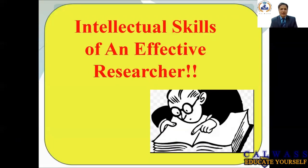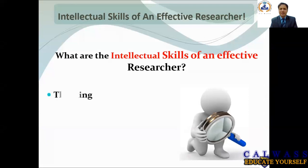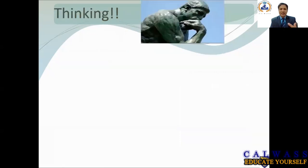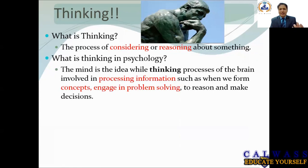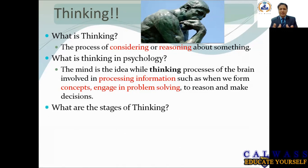So where do we start with intellectual skills? The first thing I need to understand in order to improve myself as an effective researcher is thinking. Thinking is the process of considering or reasoning about something. Psychology defines thinking as the mental processes of the brain involved in processing information, such as when we form concepts, engage in problem solving, reason, and make decisions.